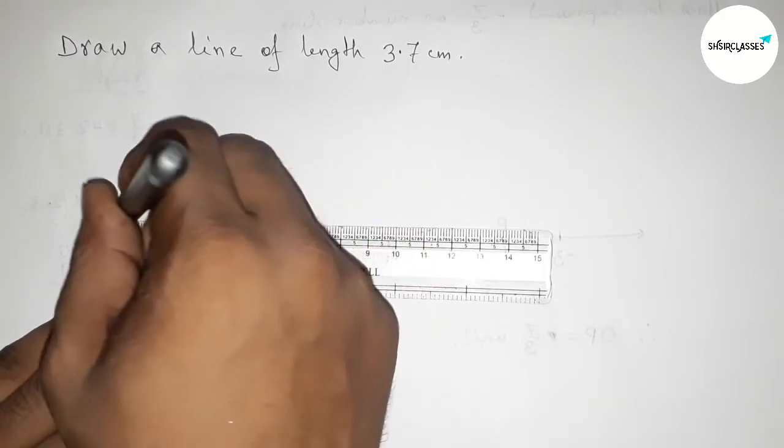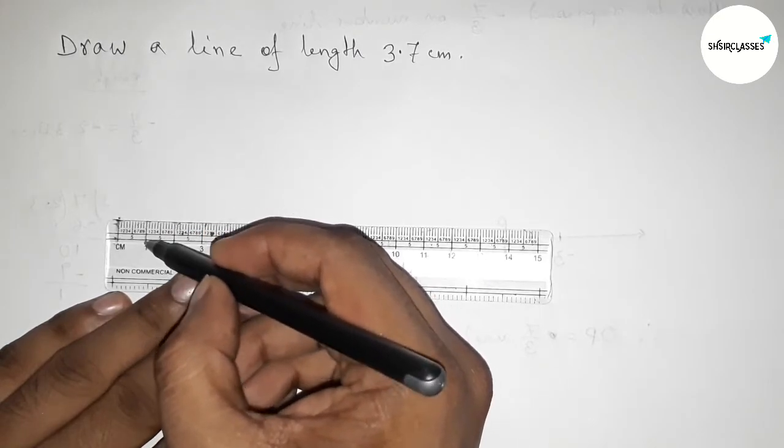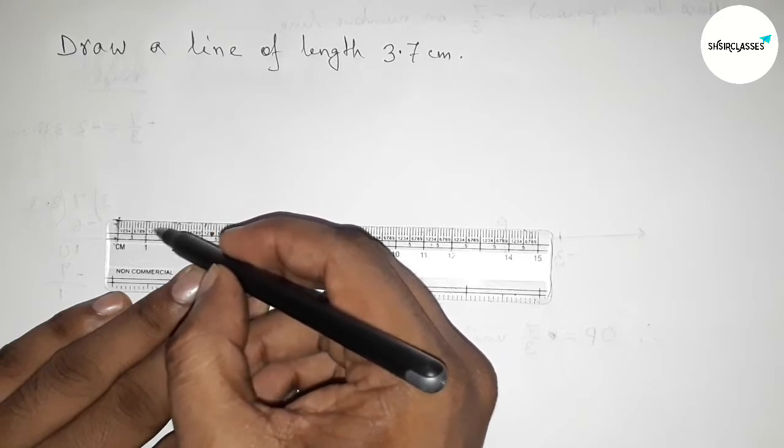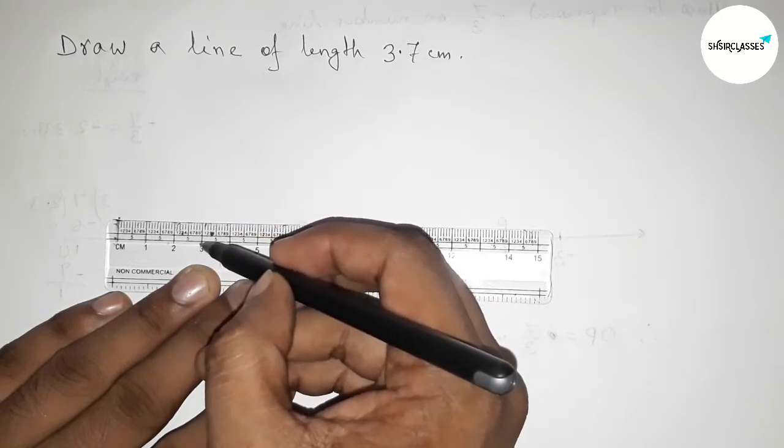And now counting 3.7 centimeter. So this is 1, and this is 2 centimeter, this is 3 centimeter.